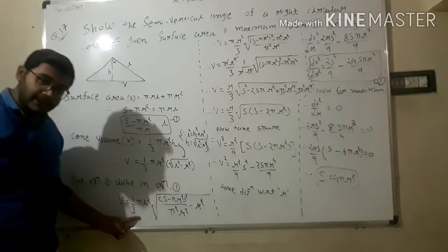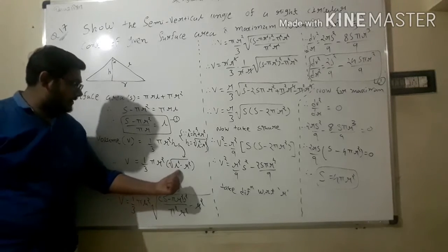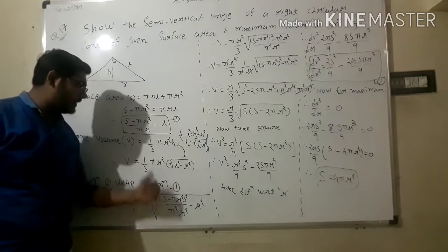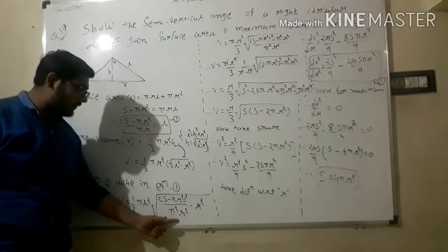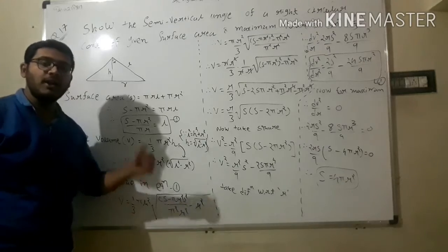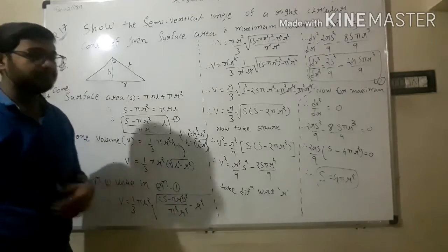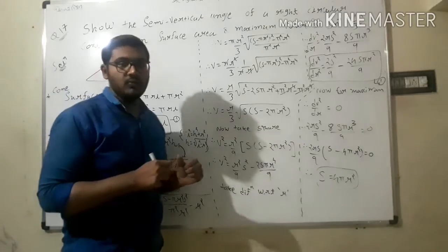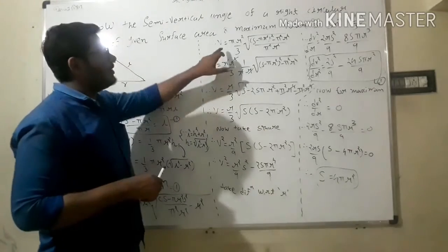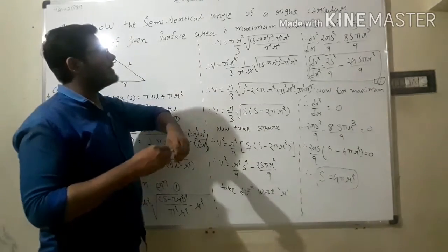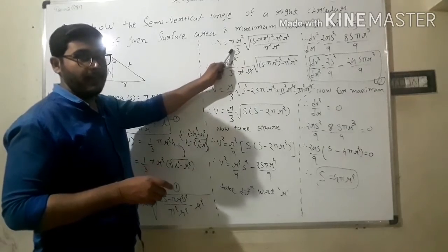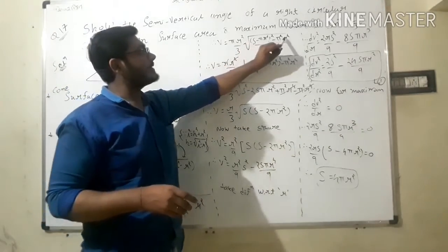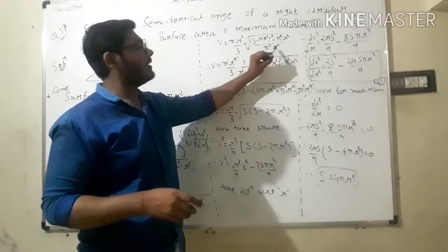So we have V = (1/3)πr² · √[ ((S - πr²)/(πr))² - r² ]. Expanding: l² = (S - πr²)² / (π²r²). Therefore V = (π²r²/3) · √[ (S - πr²)² / (π²r²) - r² ]. After simplification, taking π²r² under the square root and cancelling, we get V = (r/3) · √(S² - 2πr²S ... ).